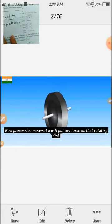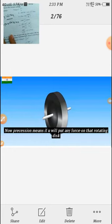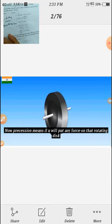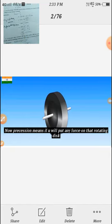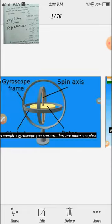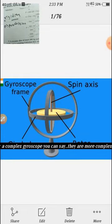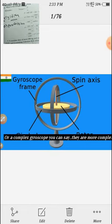Precision means if you put any force on the rotating disk, there is a change in the direction of axis. The spin axis.